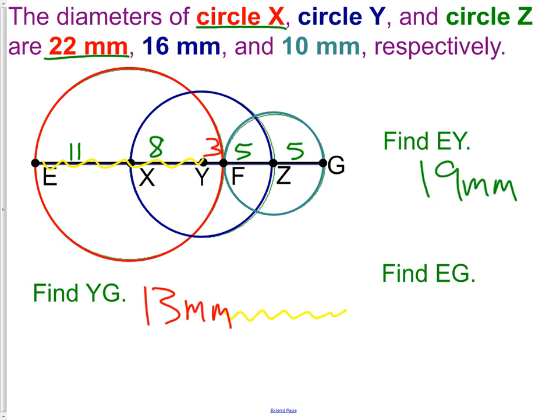We could have done this another way as well. The red circle has a diameter of 22, and what we're actually going to be taking up is this small piece from Y to F. So we're going to subtract off this piece right here, which is 3. So 22 minus 3 would also give us 19.